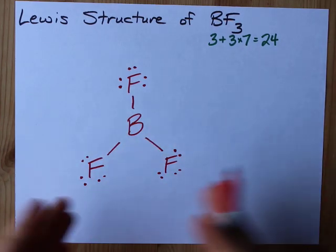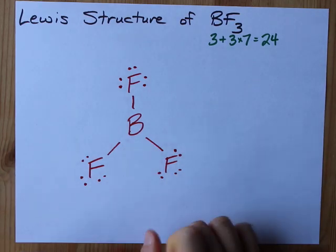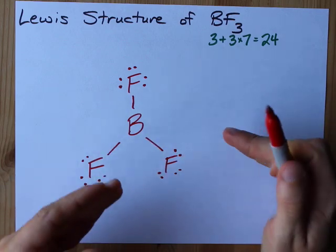Some people might tell you that the octet rule means the boron needs to have eight electrons around it, and it currently only has six.